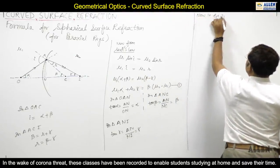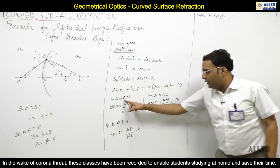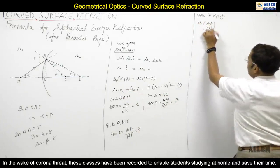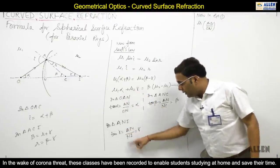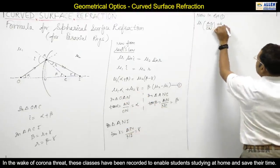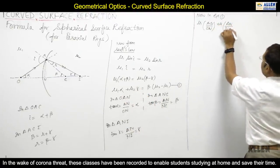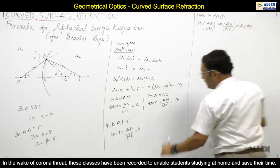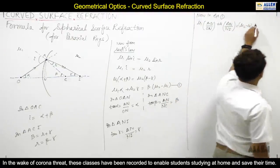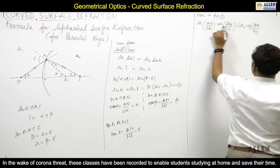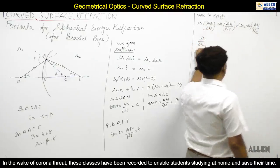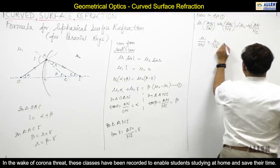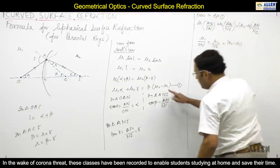Now putting these values into equation one: μ1 times (AN/OAN) + μ2 times (AN/NI) = (μ2 - μ1) times (AN/NC). The AN is common and cancels out, giving: μ1/OAN + μ2/NI = (μ2 - μ1)/NC.